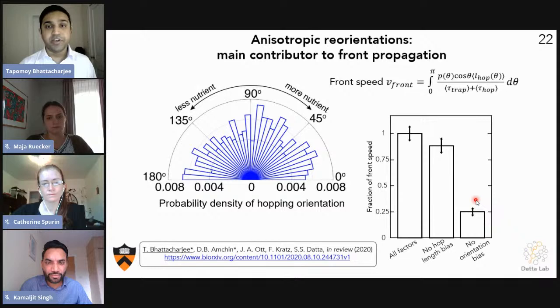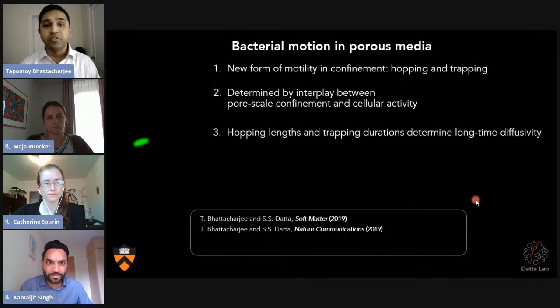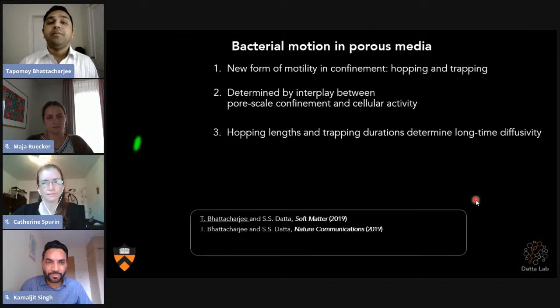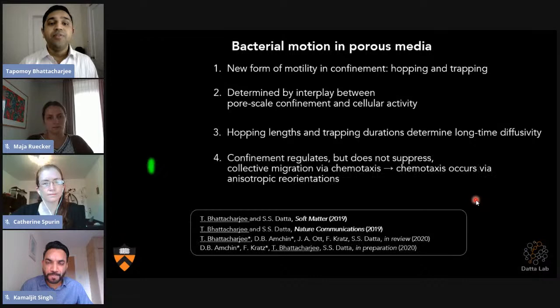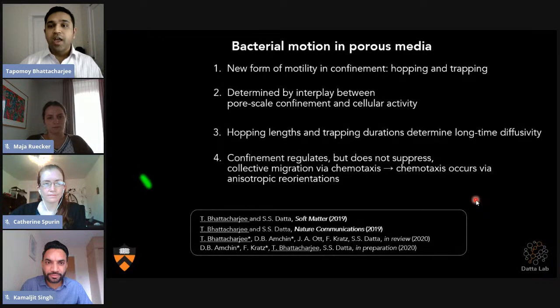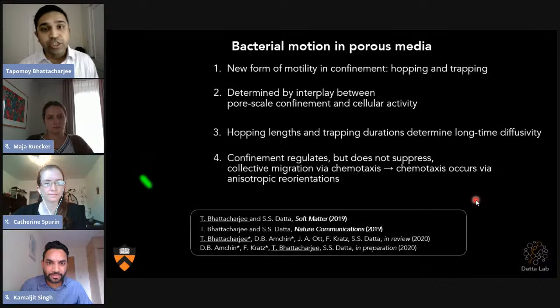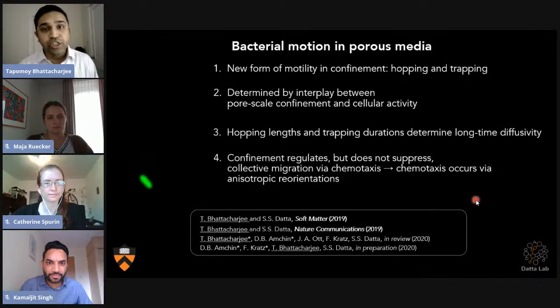So what we have found here - we found a new form of motility, which is hopping-trapping motility, which is controlled by pore-scale confinement and cellular activity. We found that measuring hopping lengths and trapping duration, we can measure the long-term diffusivity. We have found that confinement does not suppress the chemotaxis. And chemotaxis in porous media is offered by an anisotropic orientation of cells. With that, I would like to say thank you, and I would love to take your questions.